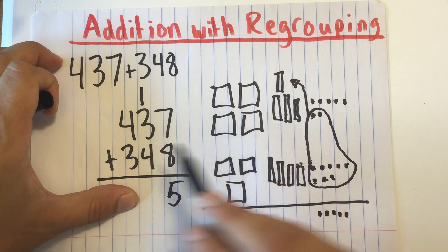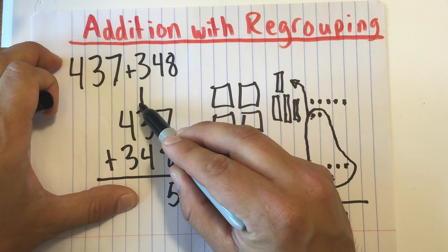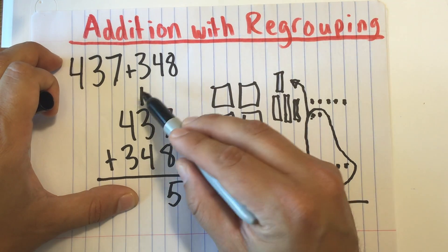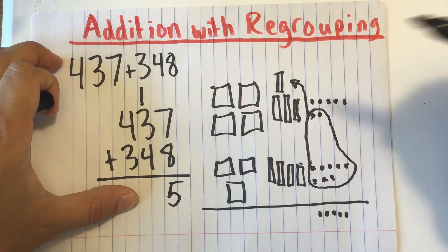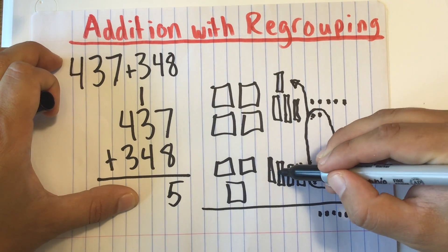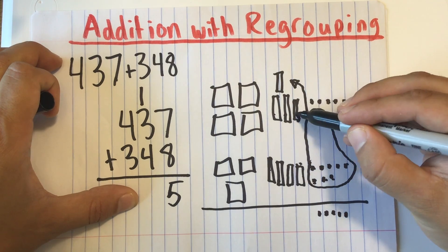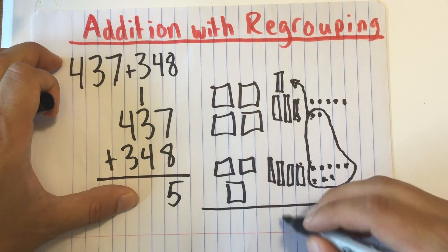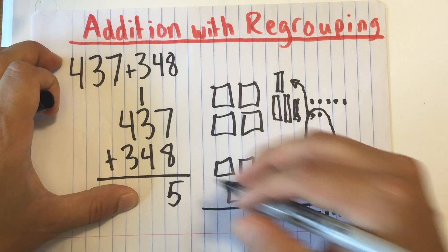Okay? Now I'm ready to add the tens. But now I need to do 1 plus 3 plus 4. 1 ten plus 3 tens plus 4 tens. Okay? And how many is that? We have 4, 5, 6, 7, 8. Okay? So there are 8 tens in all.